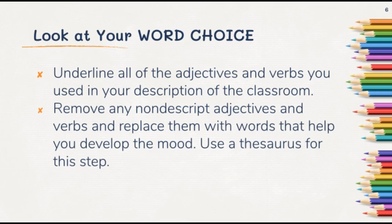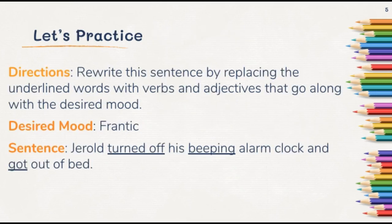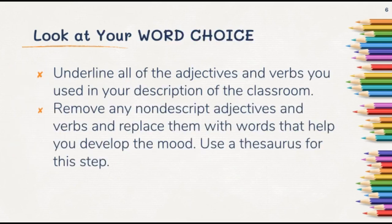You can pause this video or do this all at the end. I want you to look at the word choice in your description of a room in your house, or if you're in class, the description of the classroom. Underline all the adjectives and verbs you use in your description, then remove any nondescript adjectives and verbs and replace them with words that help you develop the mood. Like in the last example — instead of 'he got out of bed,' say 'he scrambled out of bed' to create a more frantic mood.